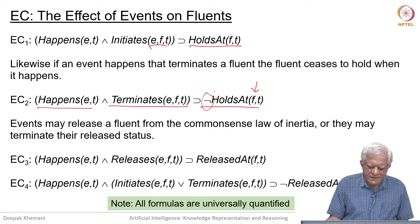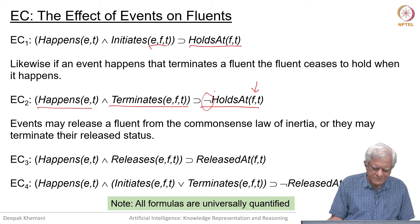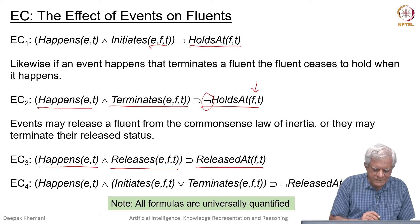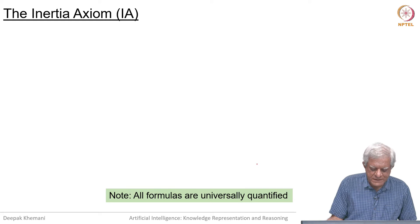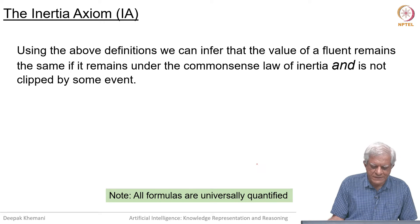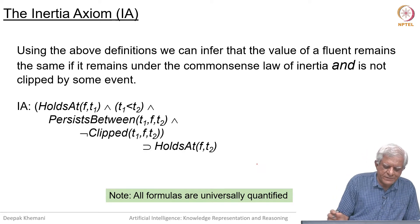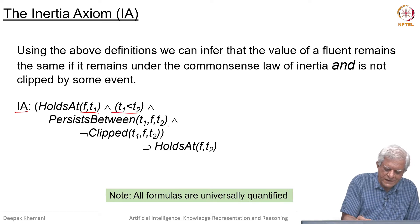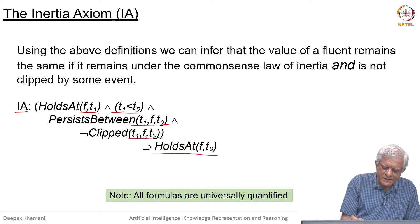We have seen that events may release the fluent from the common sense law of inertia. If the event happens and it releases the fluent, then the fluent is released essentially. Then we look at the inertia axiom: a fluent remains the same if it remains under the common sense law of inertia and is not clipped by some event. If the fluent holds at time t1 and t2 is after t1 and it persists between t1 and t2 and is not clipped between t1 and t2, then it holds at time t2.